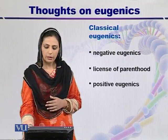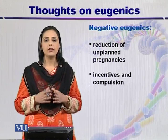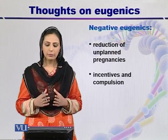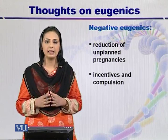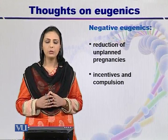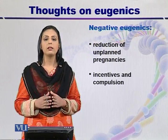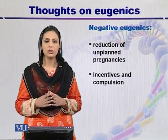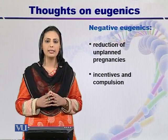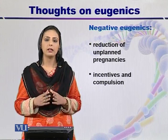Negative eugenics reduces the population and it can be done by two ways: either by reduction of unplanned pregnancies or by giving incentives and compulsions. Ways to reduce unplanned pregnancies include giving sex education in schools, clinical-based education, sterilization, and research for better contraceptives.